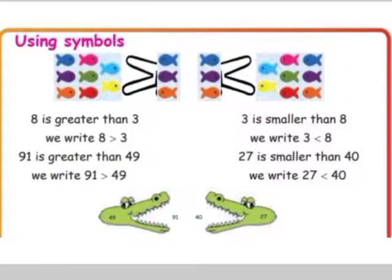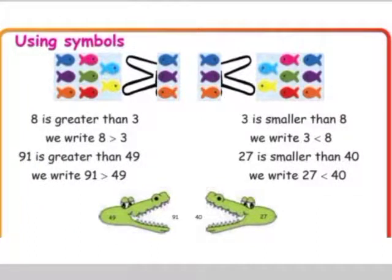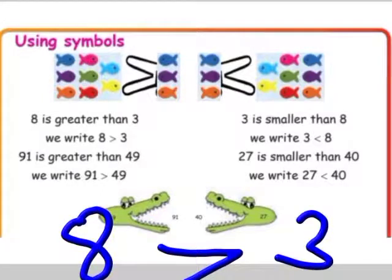Next, using symbols: 8 is greater than 3. We have already studied these symbols. This is the greater than symbol. This one is the less than symbol. So, 8 is greater than 3 and 3 is smaller than 8.